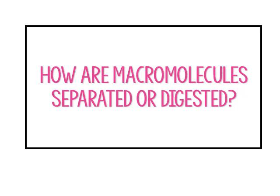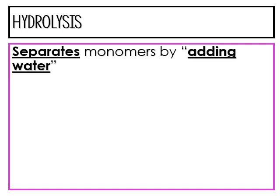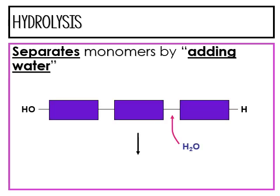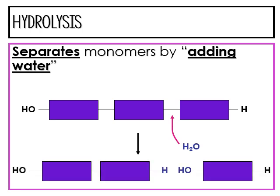But how are macromolecules separated or digested? Well, if water is removed to create them, then water is added to break them apart, and that is what we call hydrolysis. You have this same exact example from the previous slide, and then we add water, and we get what we started with in the beginning. Adding water is hydrolysis.